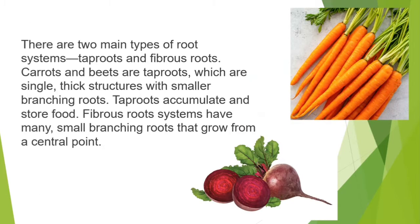There are two main types of root systems: tap roots and fibrous roots. Carrots and beets are tap roots, which are single thick structures with smaller branching roots. Tap roots accumulate and store food. Fibrous root systems have many small branching roots that grow from a central point.